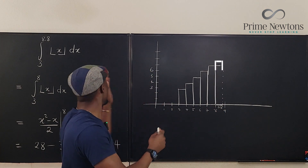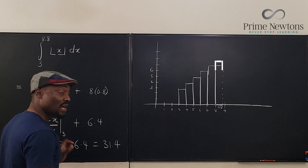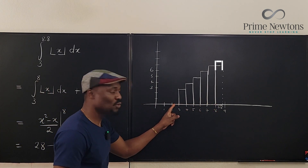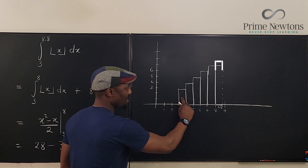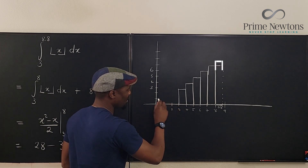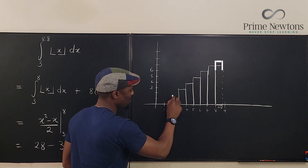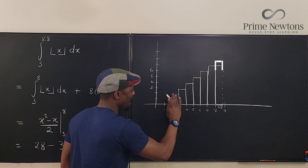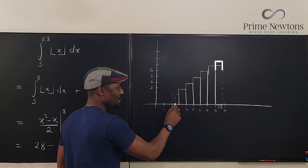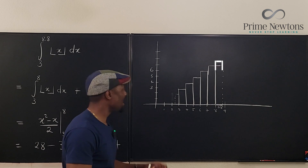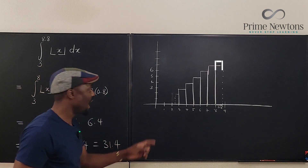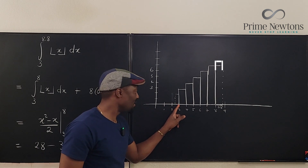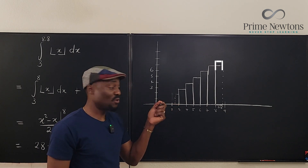Every time you get a non-integer upper or lower limit, try to look at the picture. Suppose the lower limit was 2.5 instead of 3 — you'd start from 3 and then add the missing area between 2.5 and 3. That area has height 2 (the floor of 2.5) and width 0.5, so you add 0.5 times 2, which equals 1.